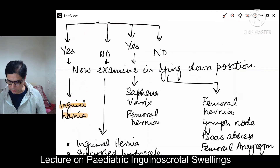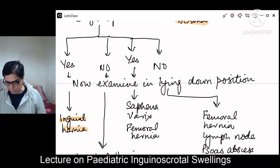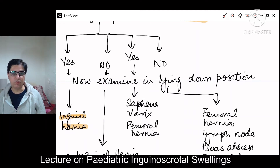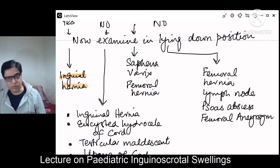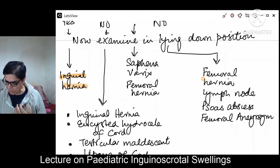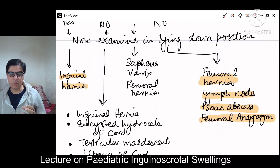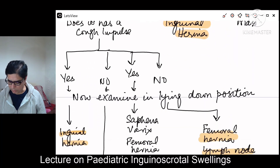If the swelling is below the inguinal ligament, these are usually femoral lumps. If you feel a cough impulse for a swelling below the inguinal ligament, it could be a sapheno-varix or a femoral hernia. If there is no cough impulse and the swelling is below the inguinal ligament, it can be a femoral hernia, an enlarged lymph node, a psoas abscess, or a femoral aneurysm — though these are rare conditions.